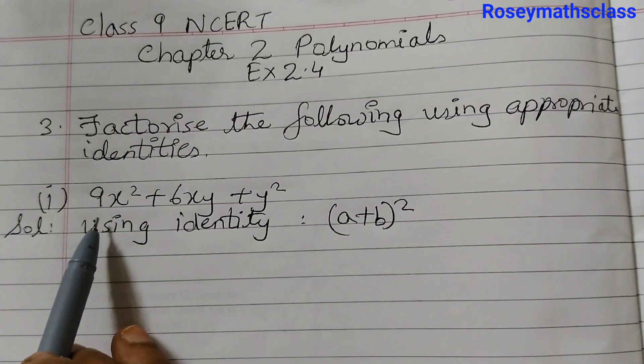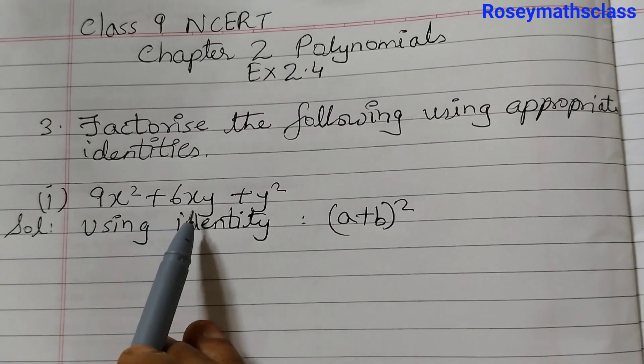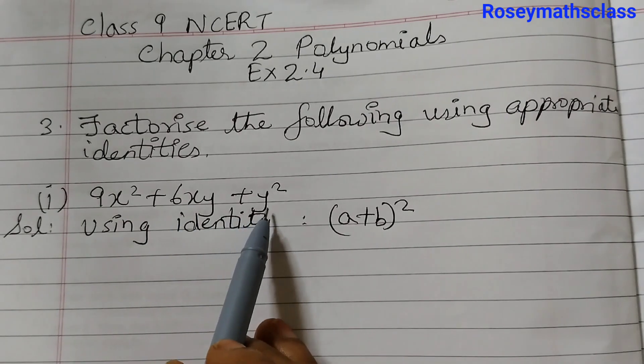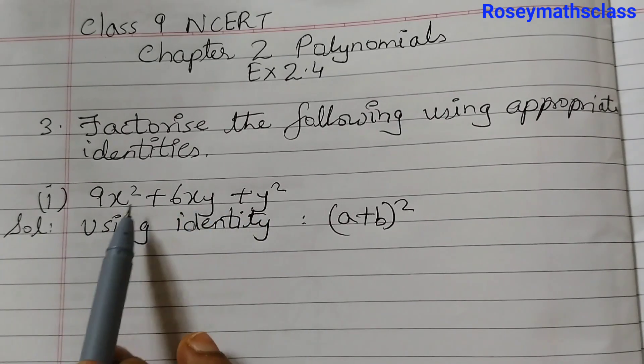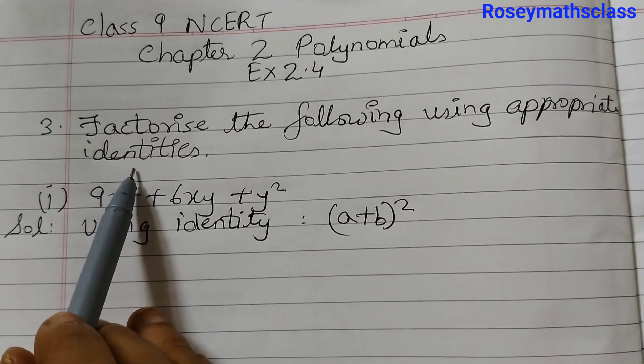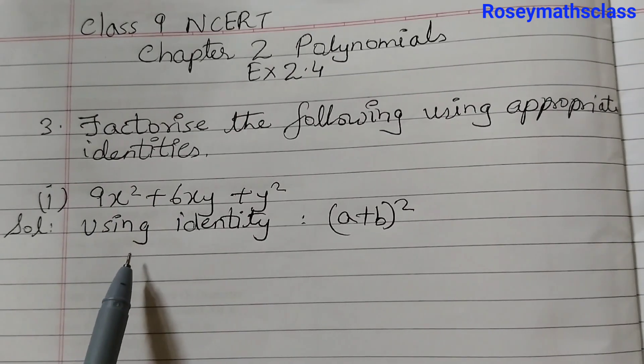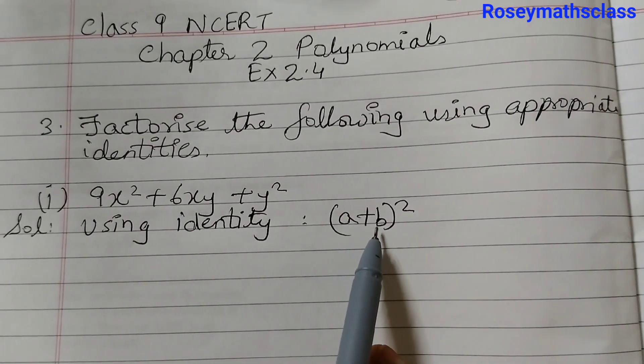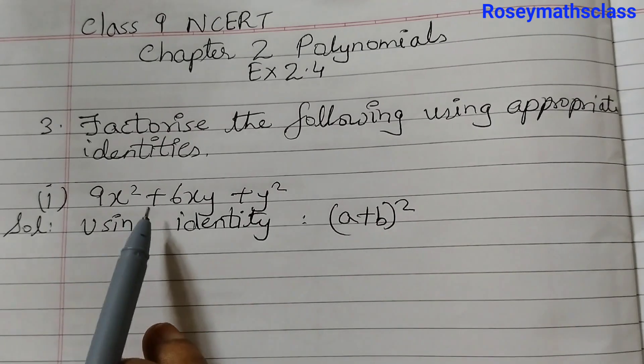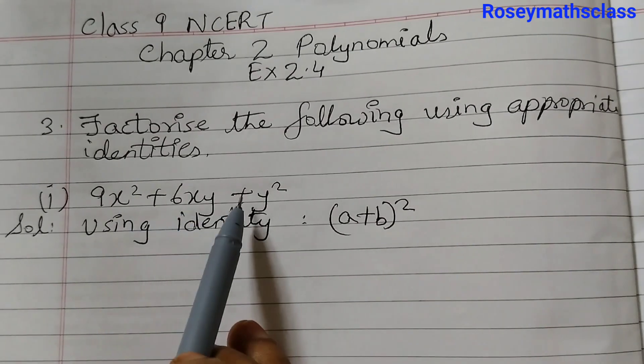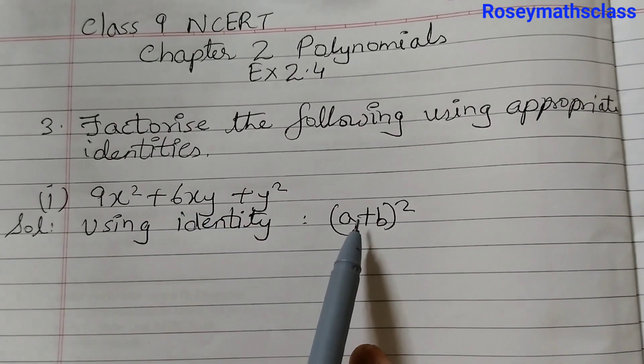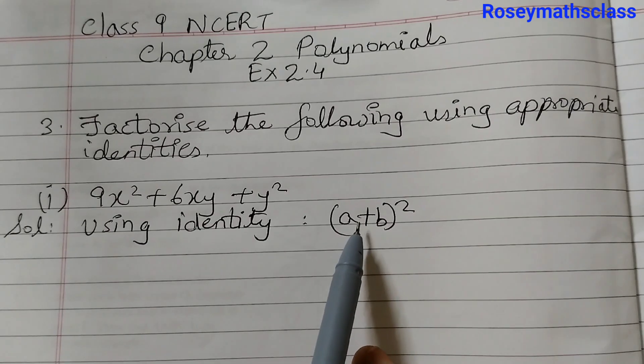The first one is 9x squared plus 6xy plus y squared. We need to factorize this given expression using identities. And for this we are going to use the identity a plus b the whole squared. We see here that there is a plus sign and a plus sign, so that's why we are using this identity.